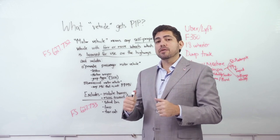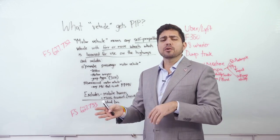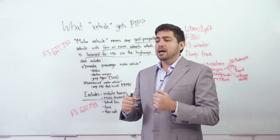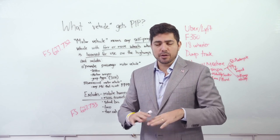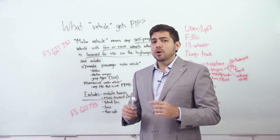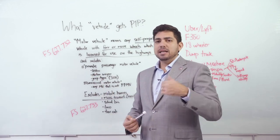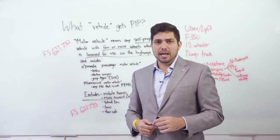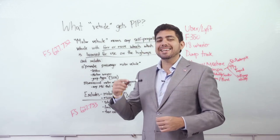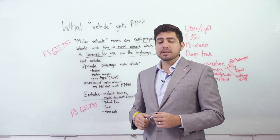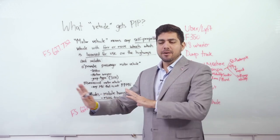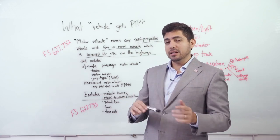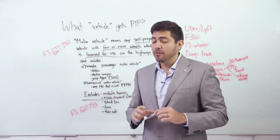So now we're going to go through some weird scenarios. Uber or Lyft. Is it a self-propelled vehicle? Yes. Four or more vehicles? Yes. Licensed for use on the highways? Duh. The problem with Uber and Lyft is it's an insurance policy that's not made for private passenger motor vehicle. It's almost like a taxi cab. So they do sometimes have PIP and sometimes they don't. It also depends about the insured. So let's say I'm the driver of an Uber car.